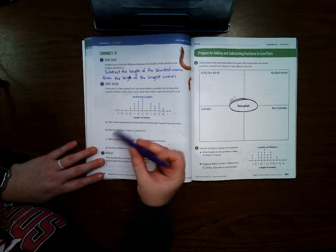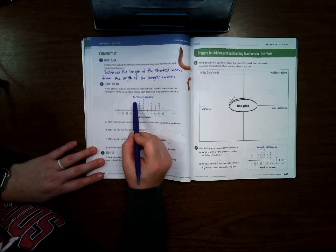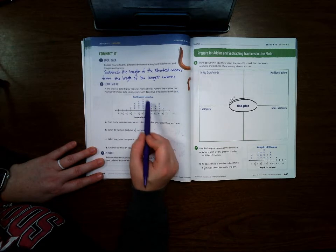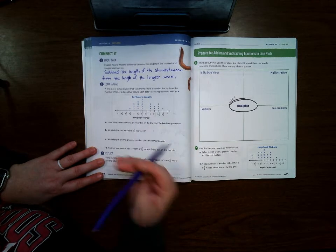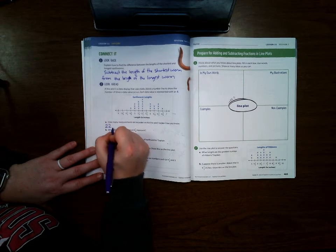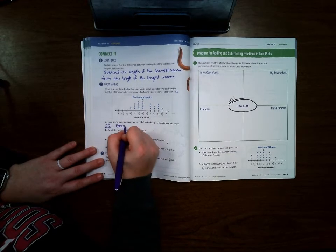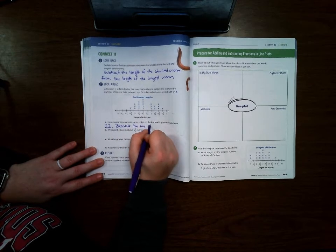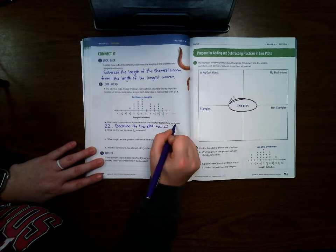So it says, how many measurements are recorded on the line plot? Explain how you know. So to see how many measurements, you count every single x. One, two, three, four, five, six, seven, eight, nine, ten, eleven, twelve, thirteen, fourteen, fifteen, sixteen, seventeen, eighteen, nineteen, twenty, twenty-one, twenty-two.